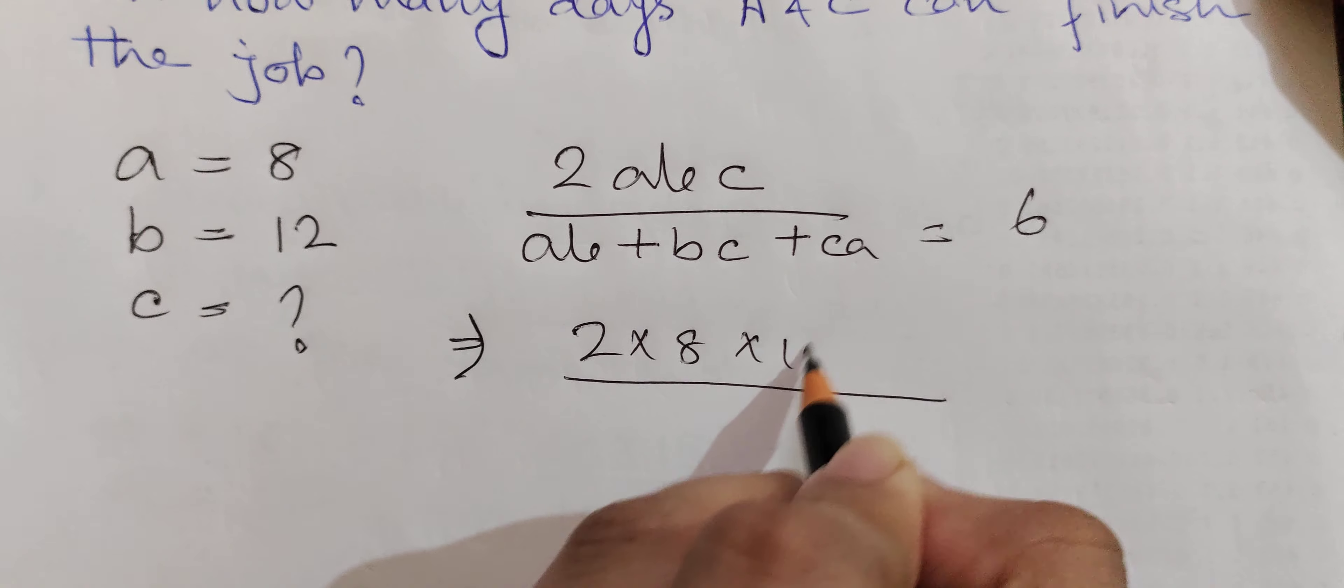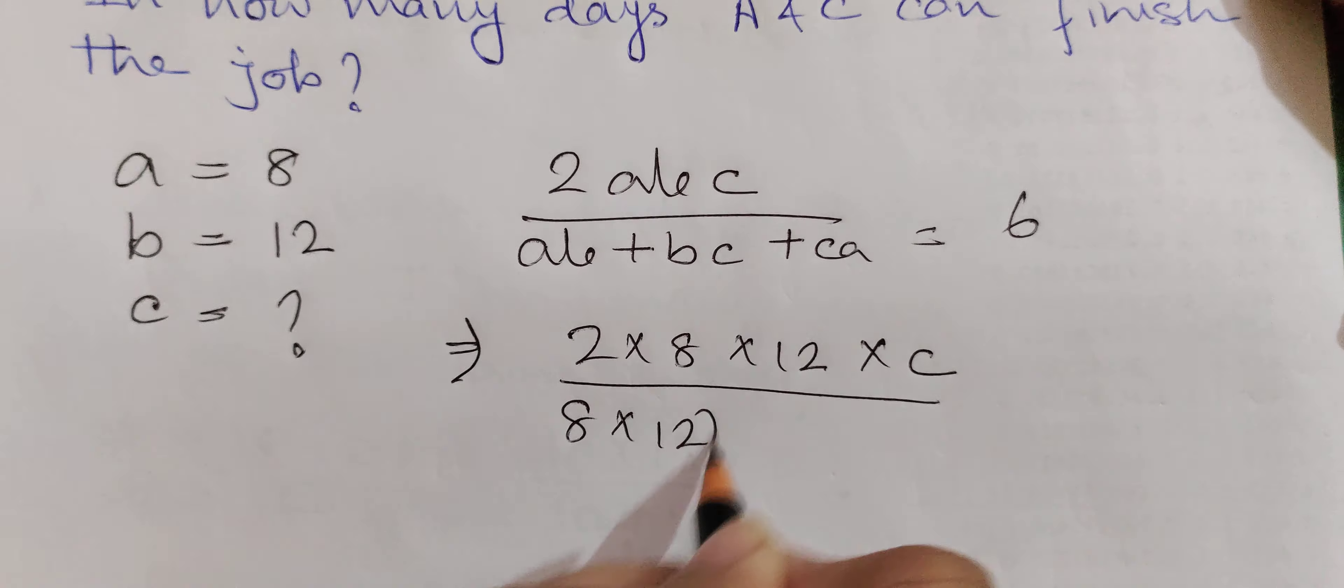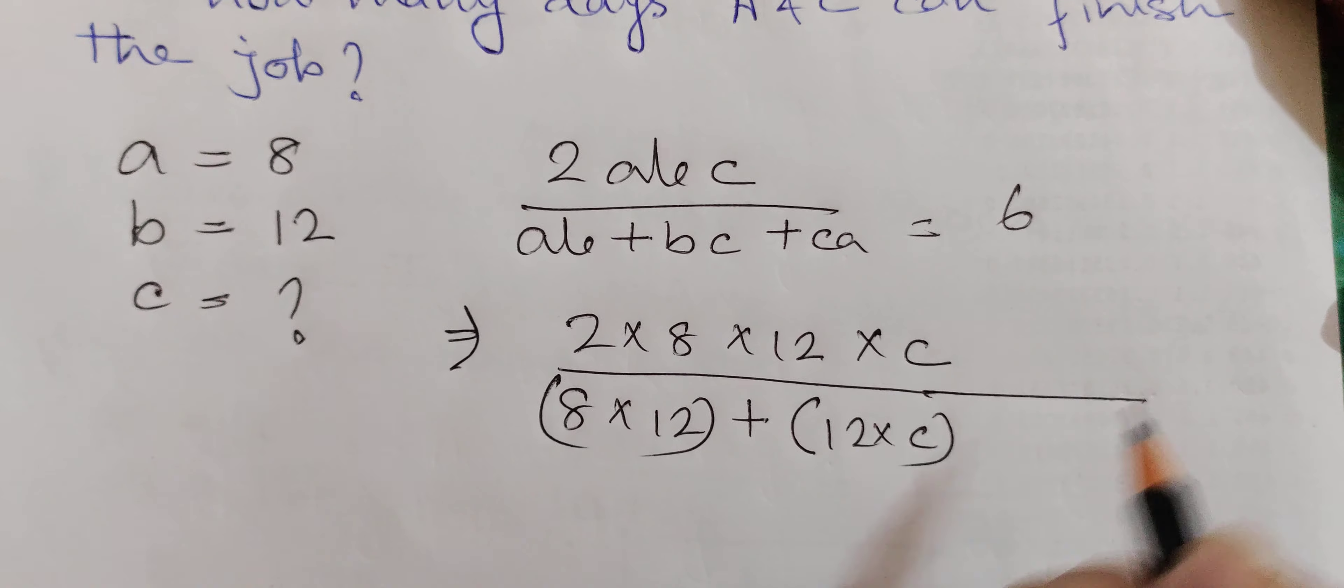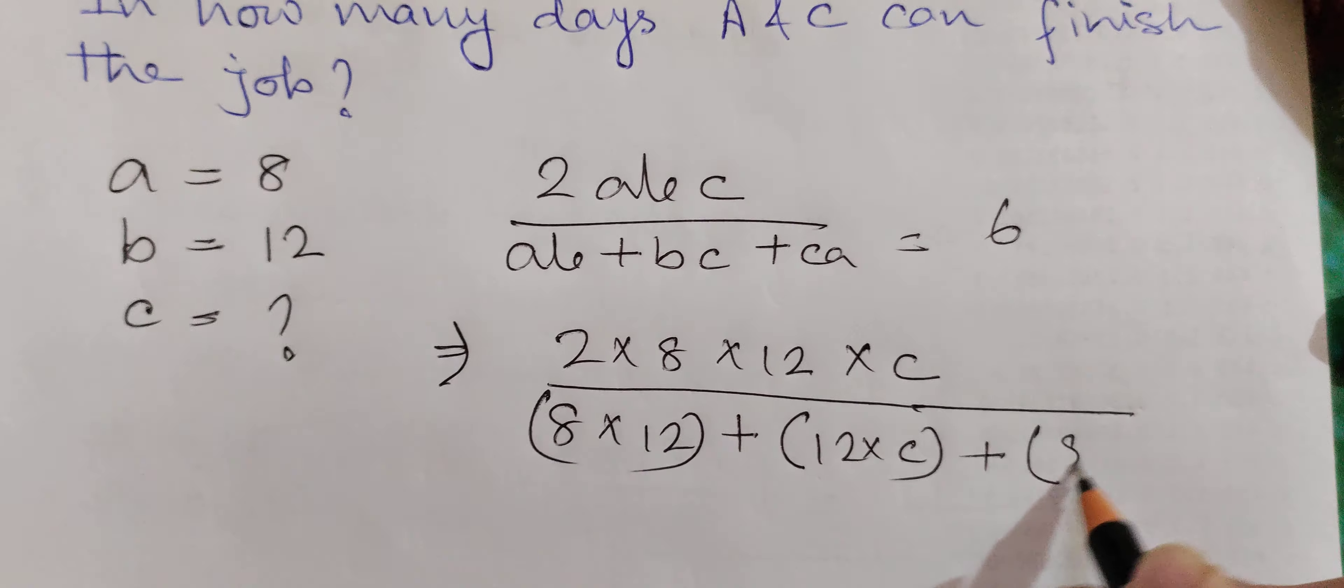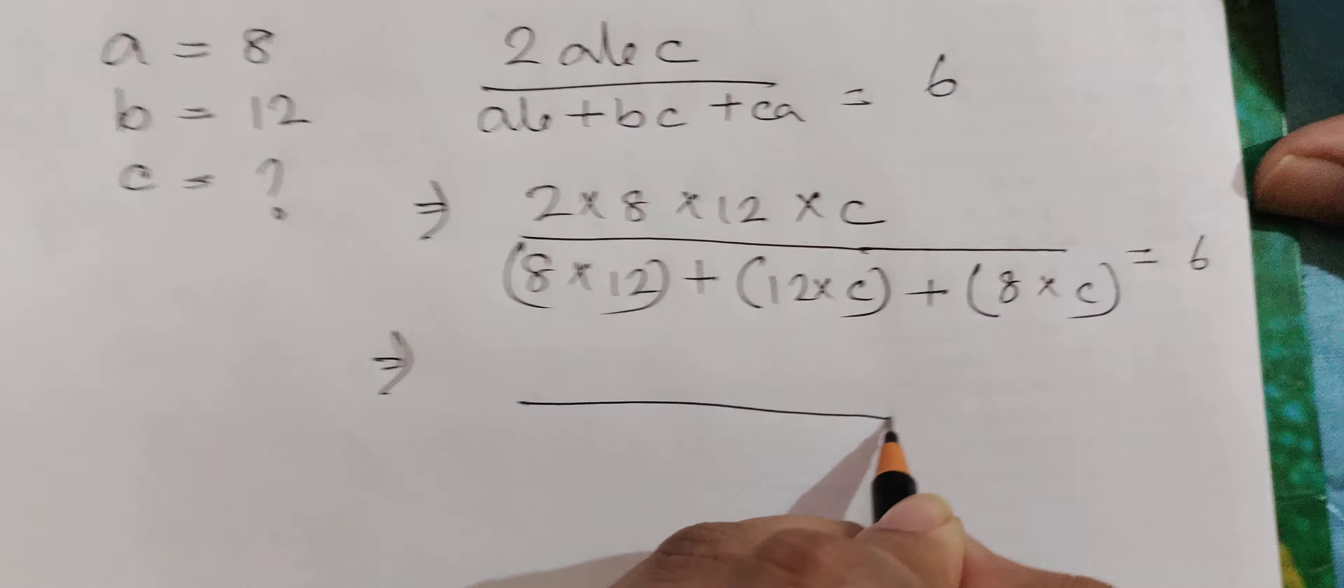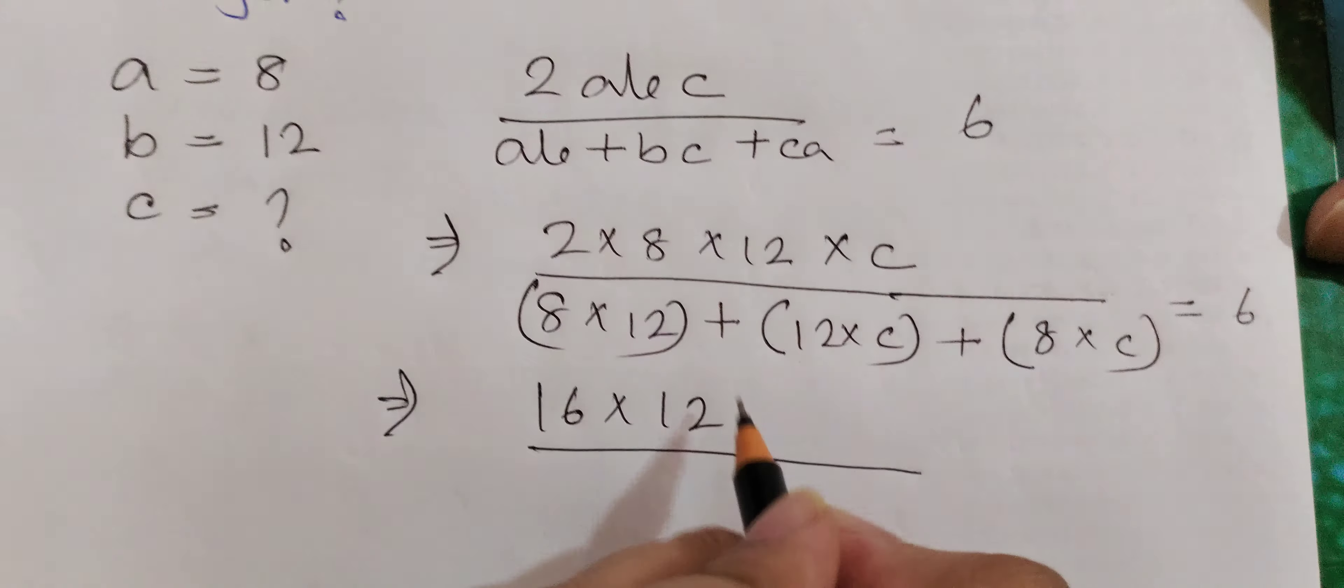So 2 times 8 times 12 times c, divided by (8 times 12 plus 12 times c plus 8 times c), equals 6. So 2 times 8 is 16, 16 times 12 times c in the numerator.